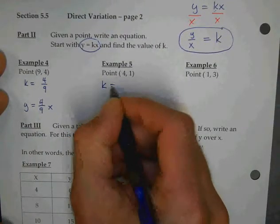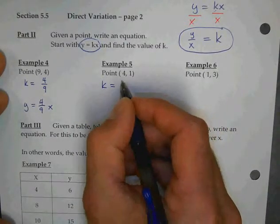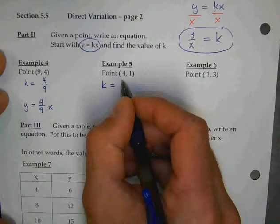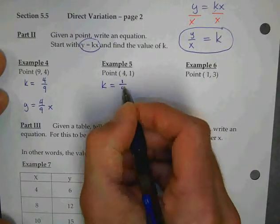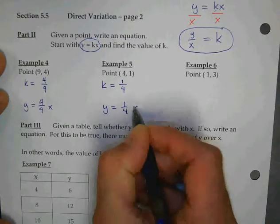All right, here's our next one. k equals y over x. What's my y value? Okay, so 1 over 4. So my equation: y equals 1 fourth x.